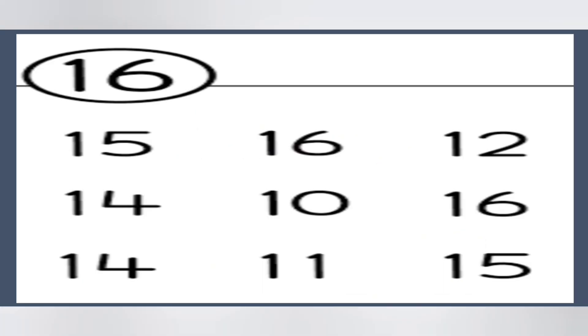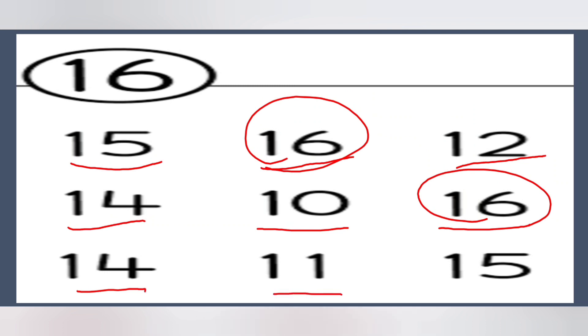So, first number. 1, 5. What is this number? Previous number we have learned. That is 15. 1, 6, 16. So, we will circle it. 1, 2, 12. 1, 4, 14. 1, 0, 10. 1, 6, 16. 14. And then 1, 1, 11. 1, 5, 15. So, total how many 16s are there? Only 2 16s are there.